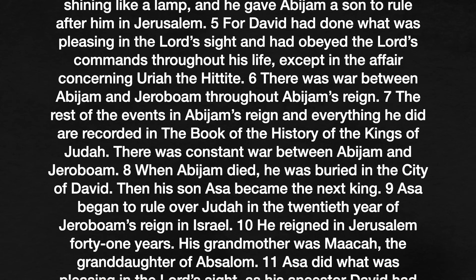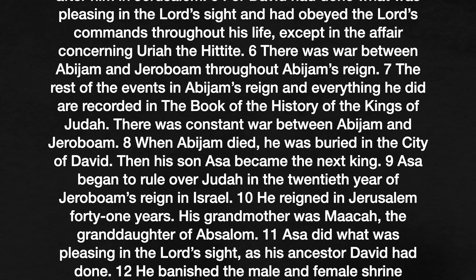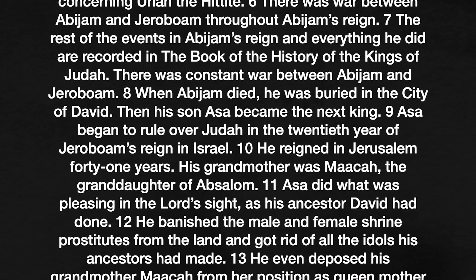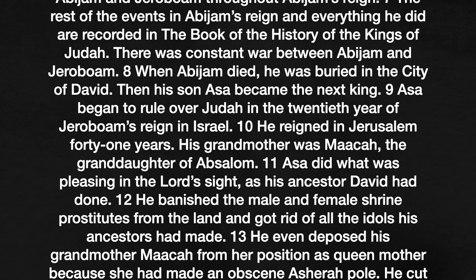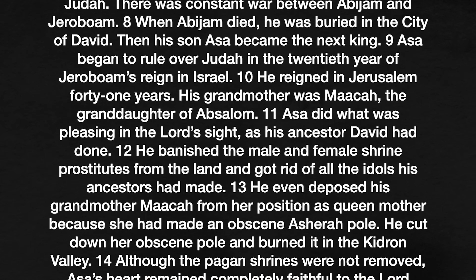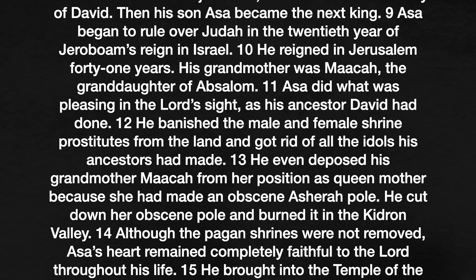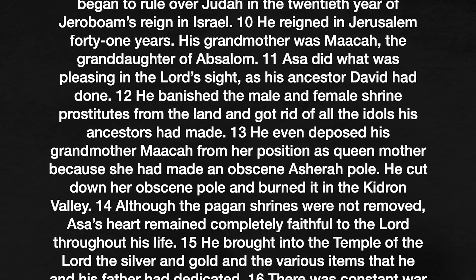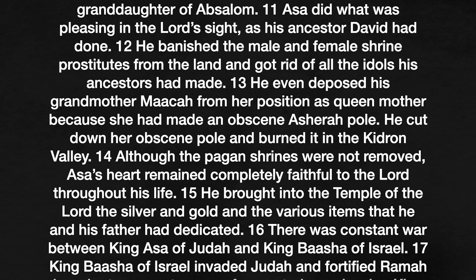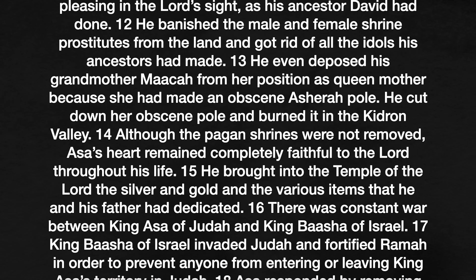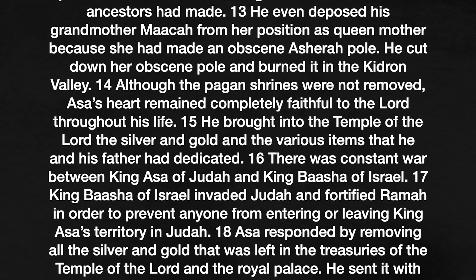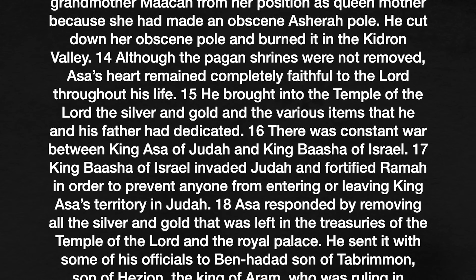The rest of the events of Abijam's reign and everything he did are recorded in the book of the history of the kings of Judah. There was constant war between Abijam and Jeroboam. When Abijam died, he was buried in the city of David. Then his son Asa became the next king. Asa began to rule over Judah in the twentieth year of Jeroboam's reign in Israel. He reigned in Jerusalem forty-one years. His grandmother was Maakah, the granddaughter of Absalom. Asa did what was pleasing in the Lord's sight, as his ancestor David had done. He banished the male and female shrine prostitutes from the land and got rid of all the idols his ancestors had made. He even deposed his grandmother Maakah from her position as queen mother because she had made an obscene Asherah pole. He cut down her obscene pole and burned it in the Kidron Valley. Although the pagan shrines were not removed, Asa's heart remained completely faithful to the Lord throughout his life.